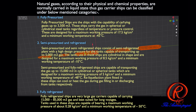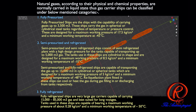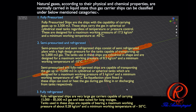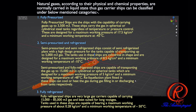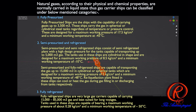2. Semi-Pressurized and Semi-Refrigerated ships consist of semi-refrigerated plants with a high design pressure for the tanks, capable of transporting up to 5,000 cubic meters. The tanks used in these ships are cylindrical in shape and are designed for a maximum working pressure of 8.5 kg per square centimeter and a minimum working temperature of minus 48 degrees Celsius.